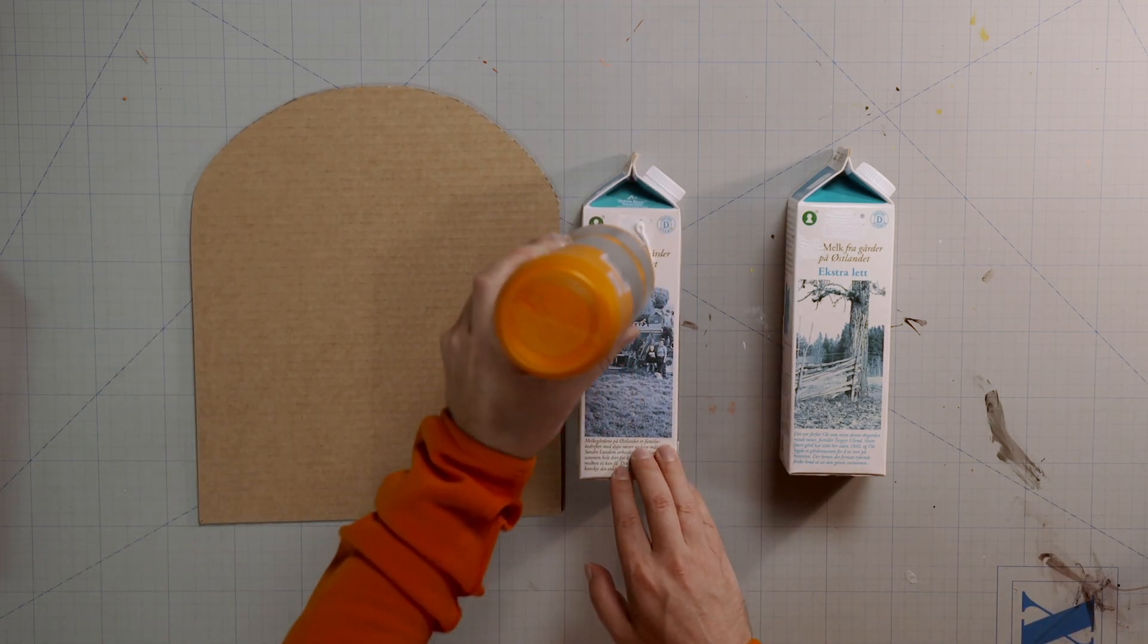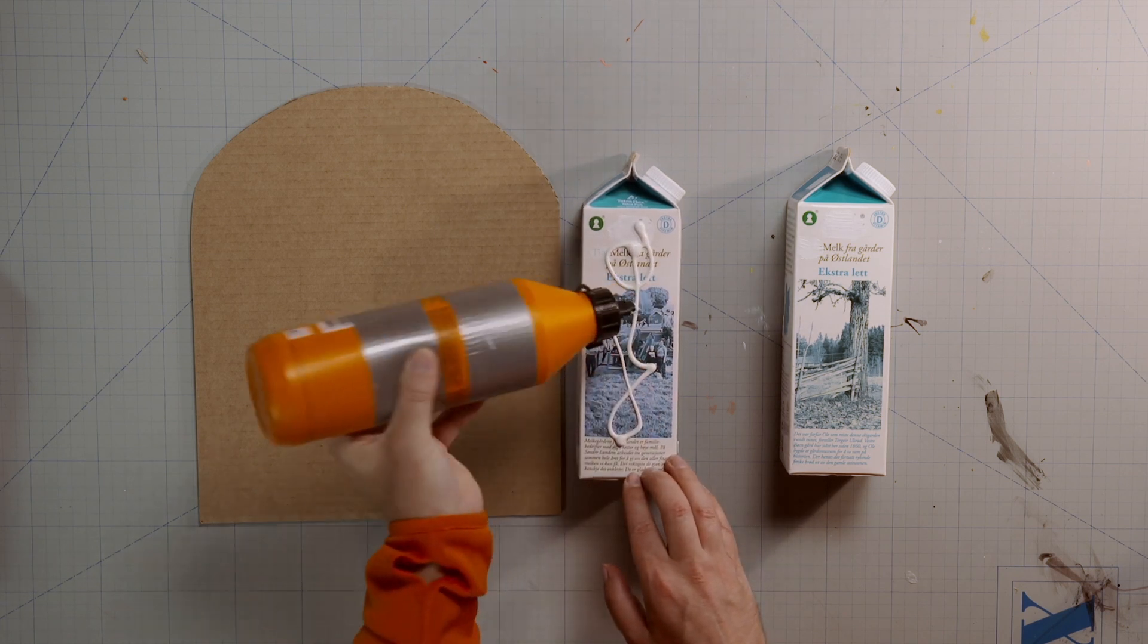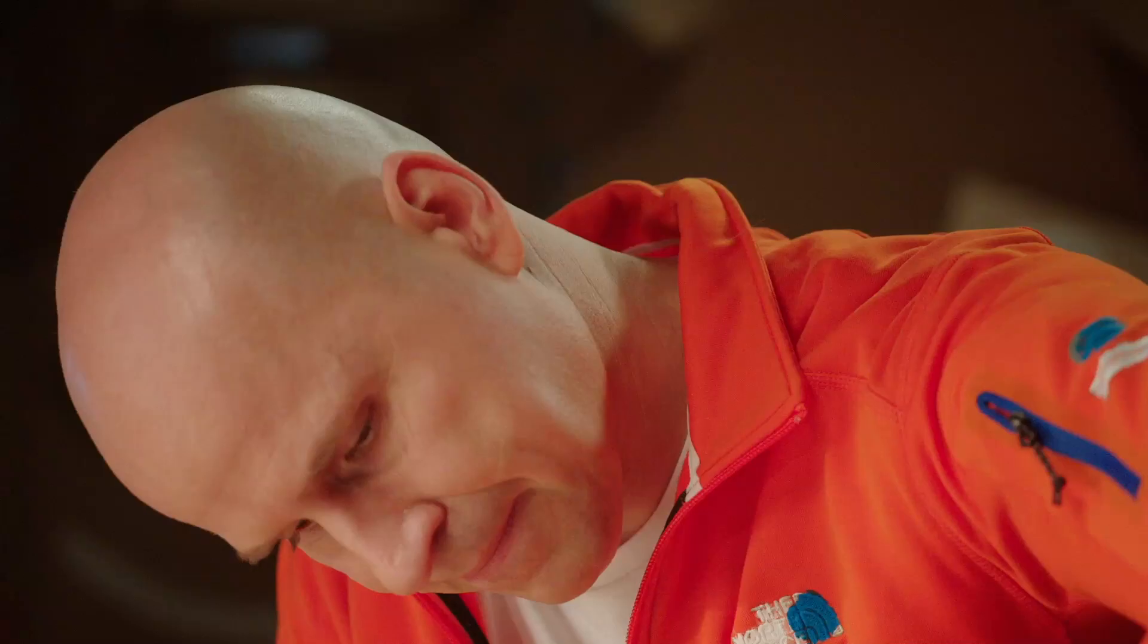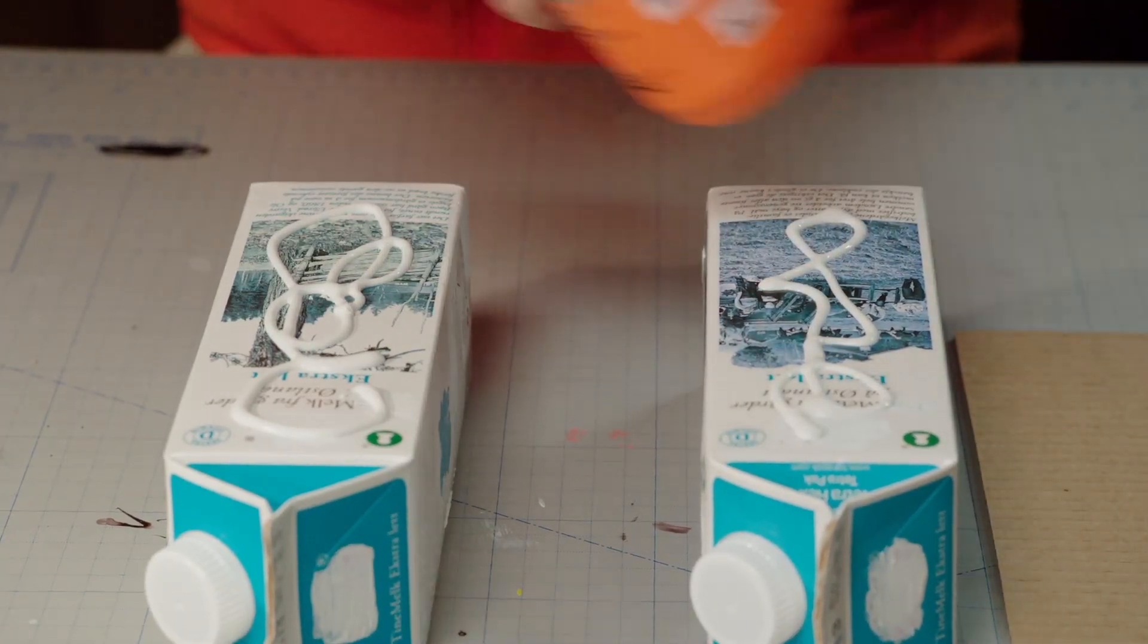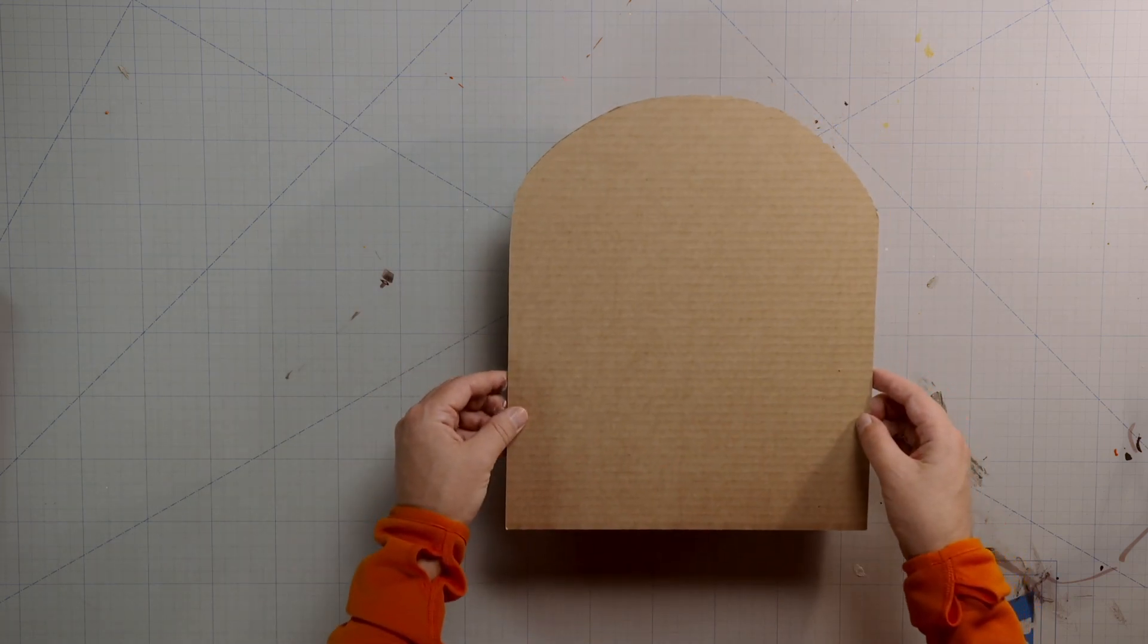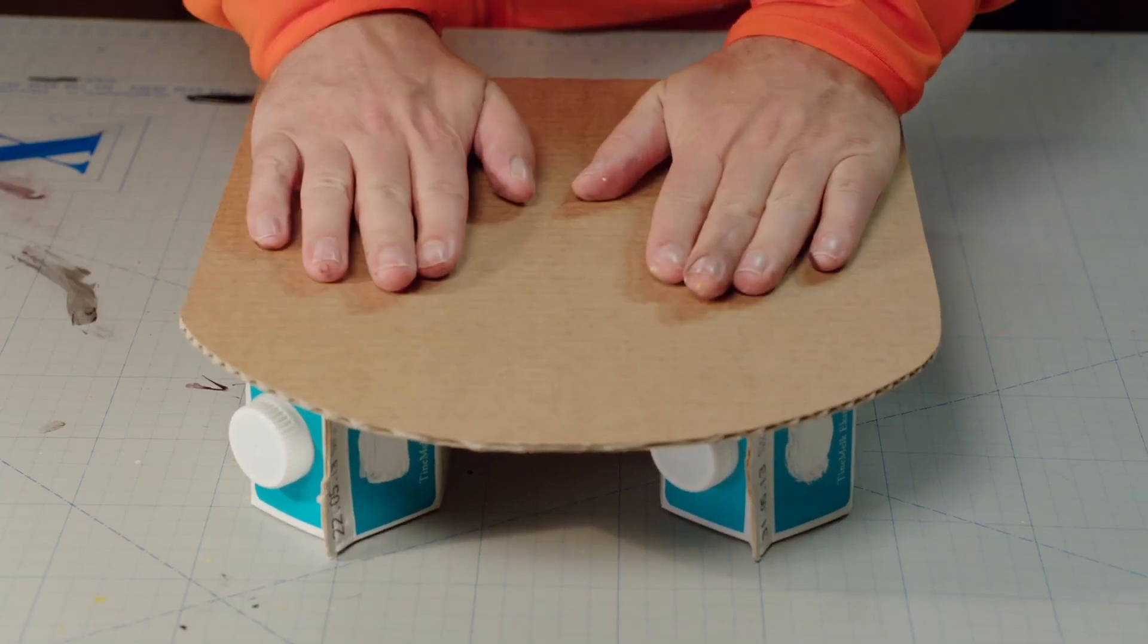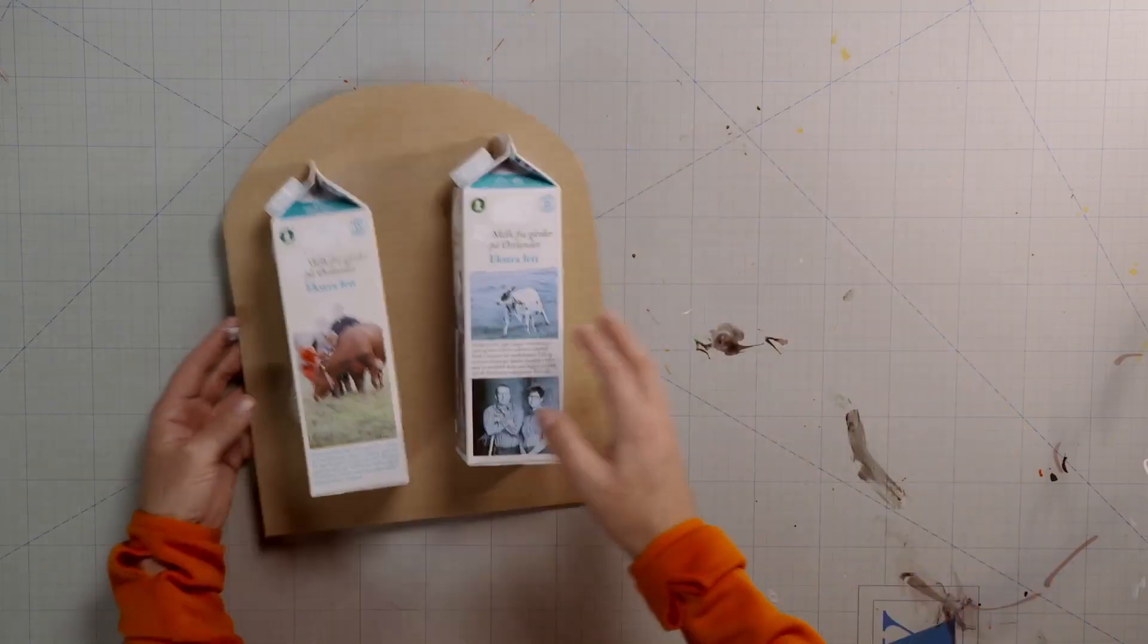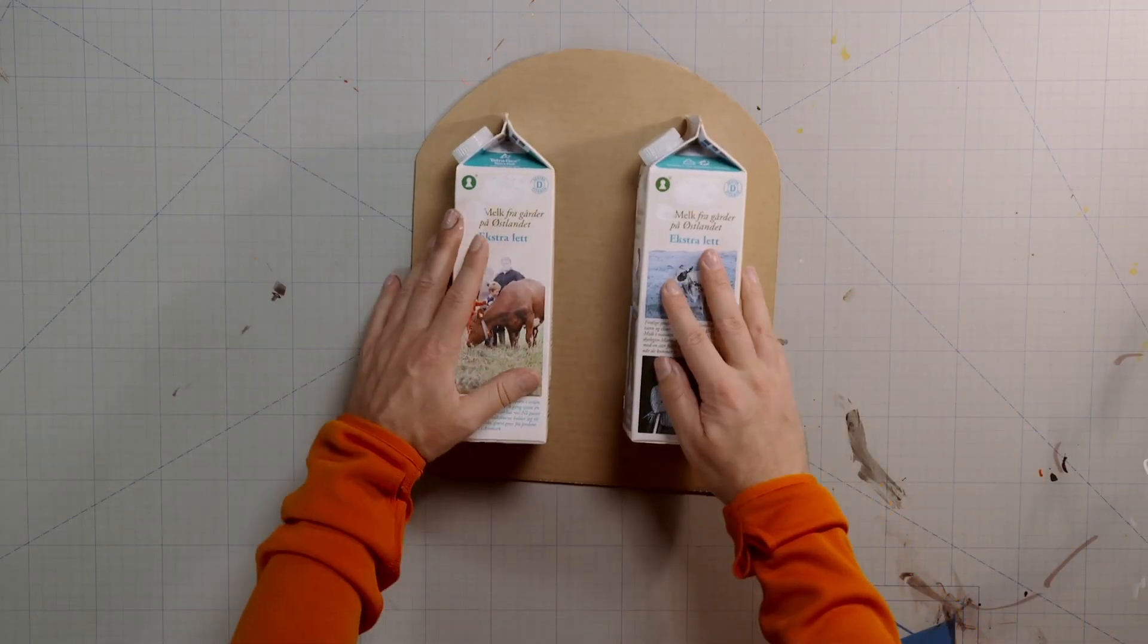Squirt some glue along the top of the cartons. Glue the cardboard on and push down gently. Turn the whole thing over to check that they are in the right place.